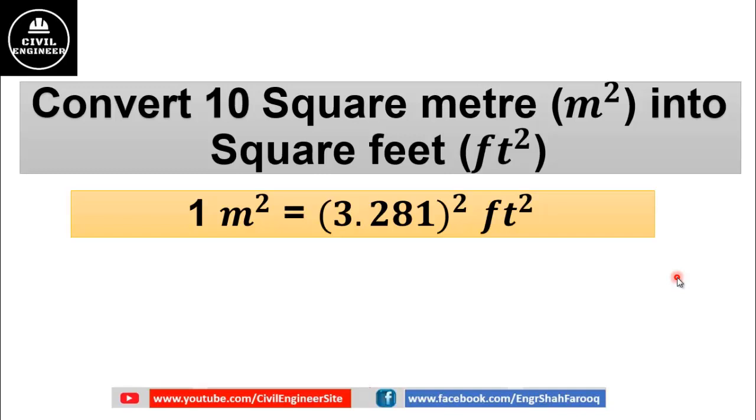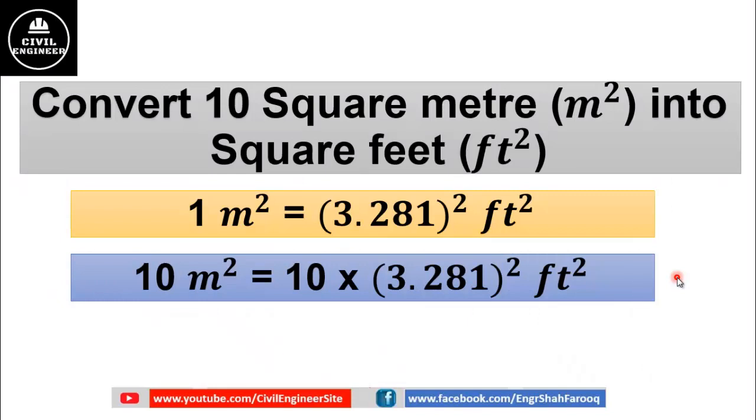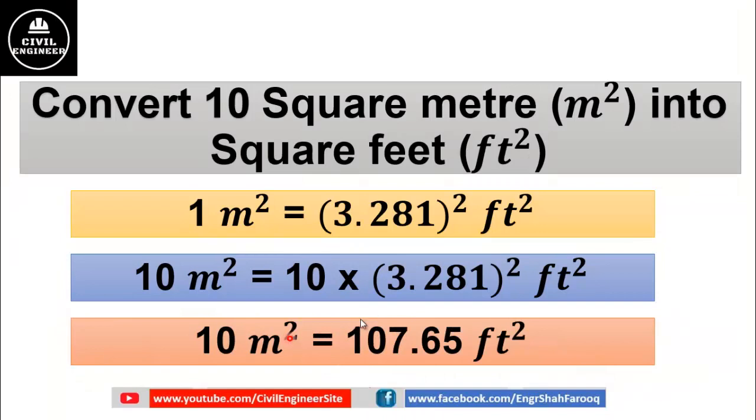Now to convert 10 meter square into square feet, just multiply 10 by (3.281)². After doing simple calculation, we will get 10 square meter is equal to 107.65 square feet.